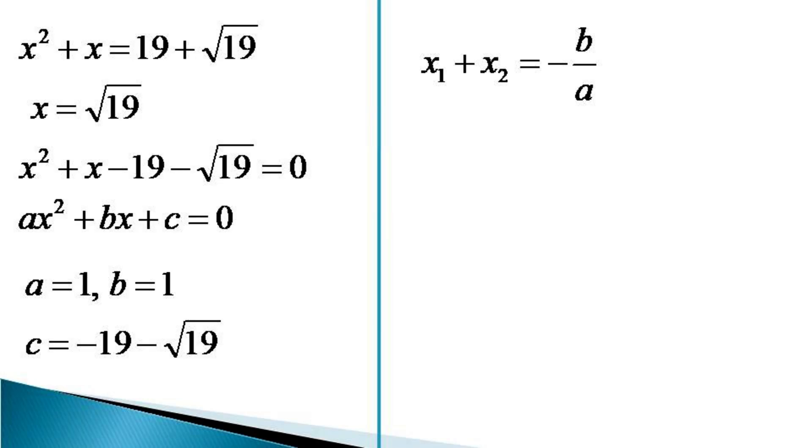Putting these values and the value of the first root that is root 19, we get root 19 plus x2 becoming equal to minus 1 since both a and b are unity. So we get the value of x2, that is the second root, as being equal to minus 1 minus root 19.